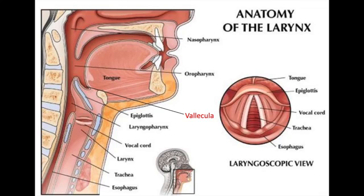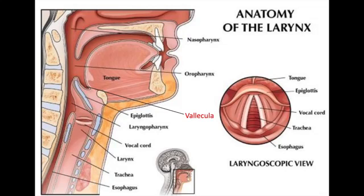The first anatomical structure you will encounter is the teeth. Pay attention to patients with buck teeth, damaged teeth, or dentures, as this can complicate your airway. From there, you will need to locate the tongue. Know where the vallecular is located, as this will be the point of manipulation when using your curved Macintosh blade. The vocal cords and trachea are always anterior to the esophagus.